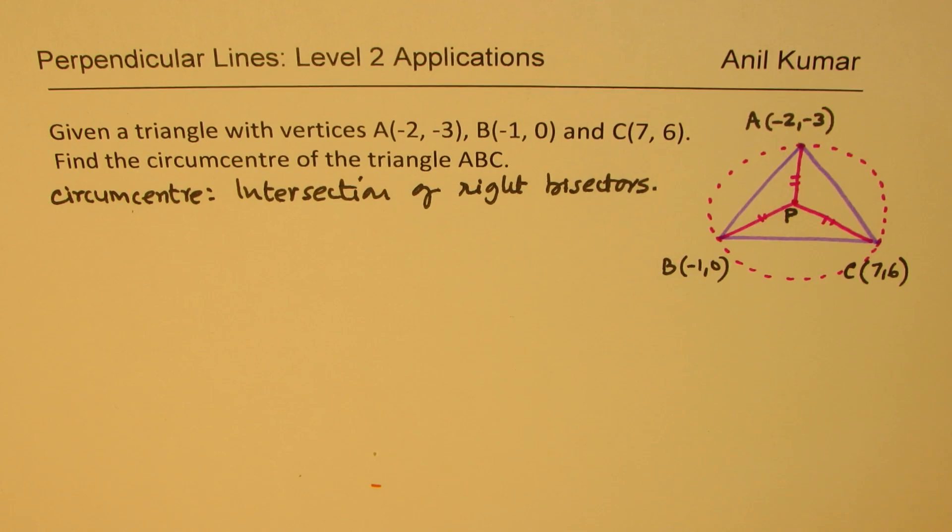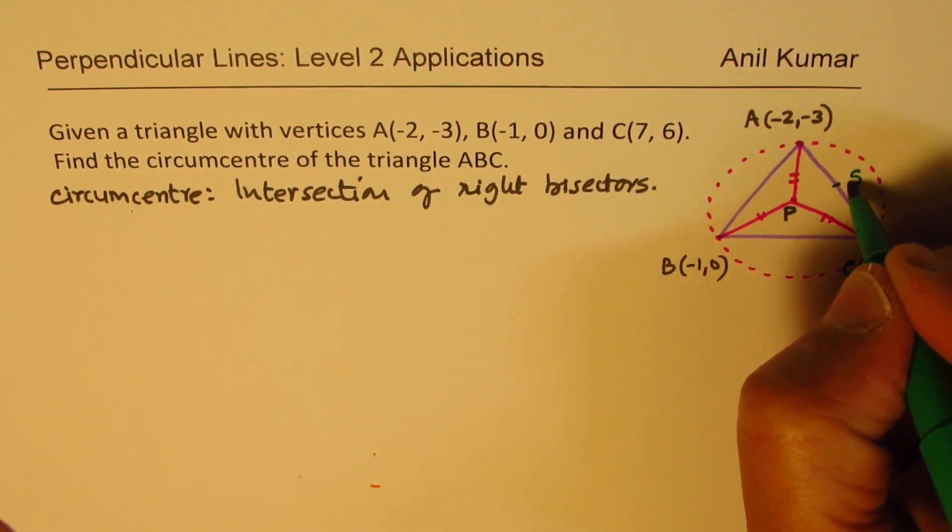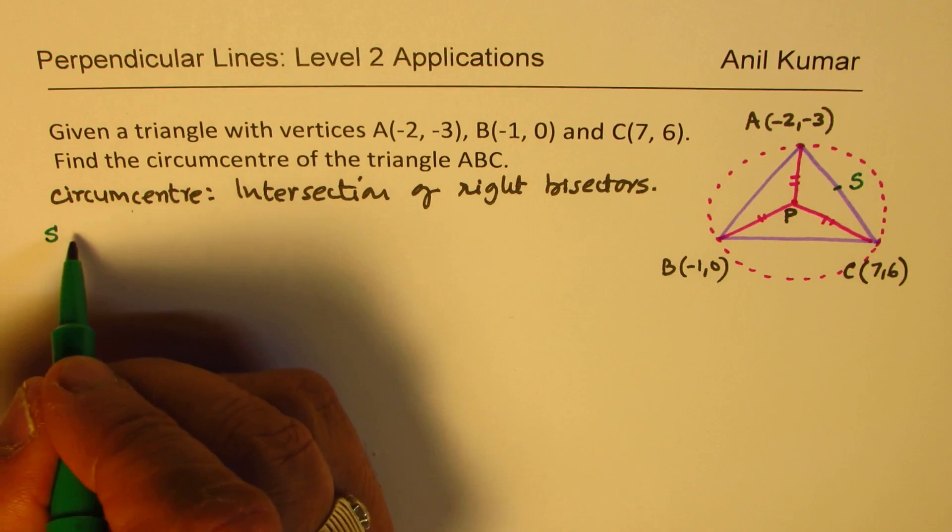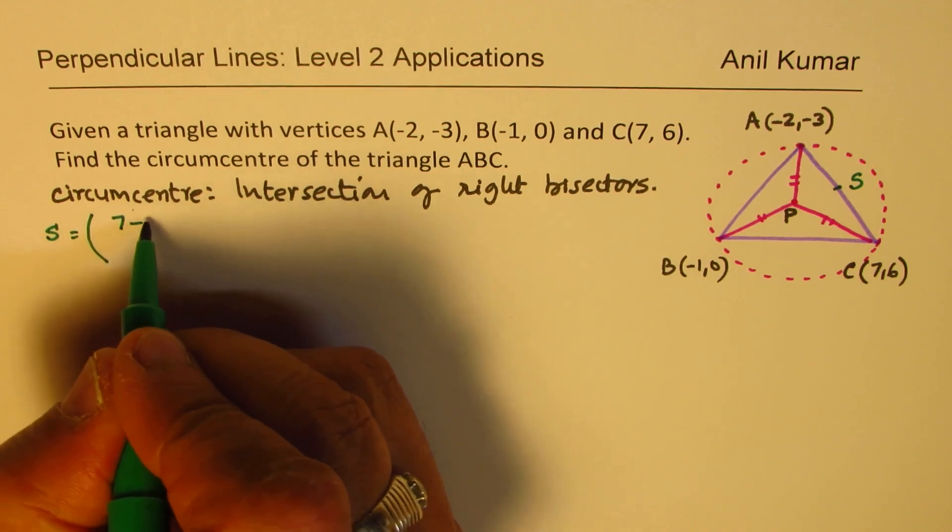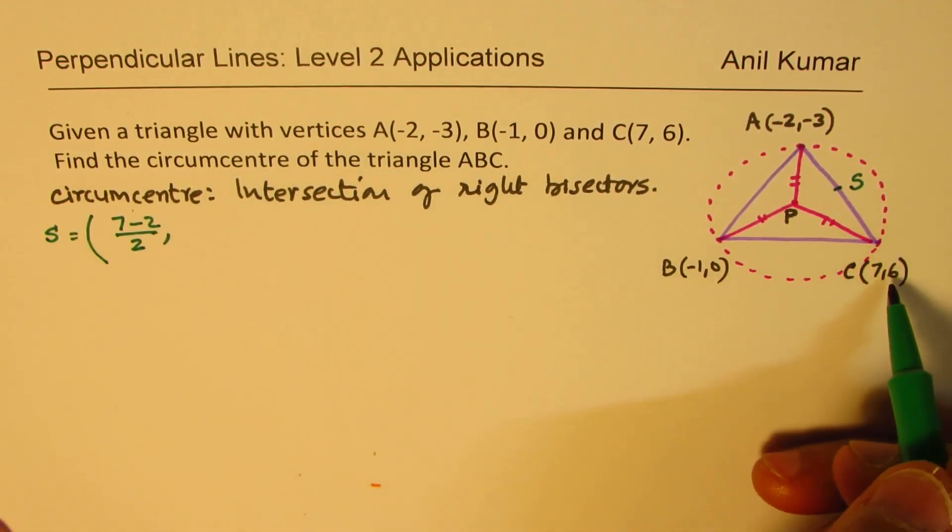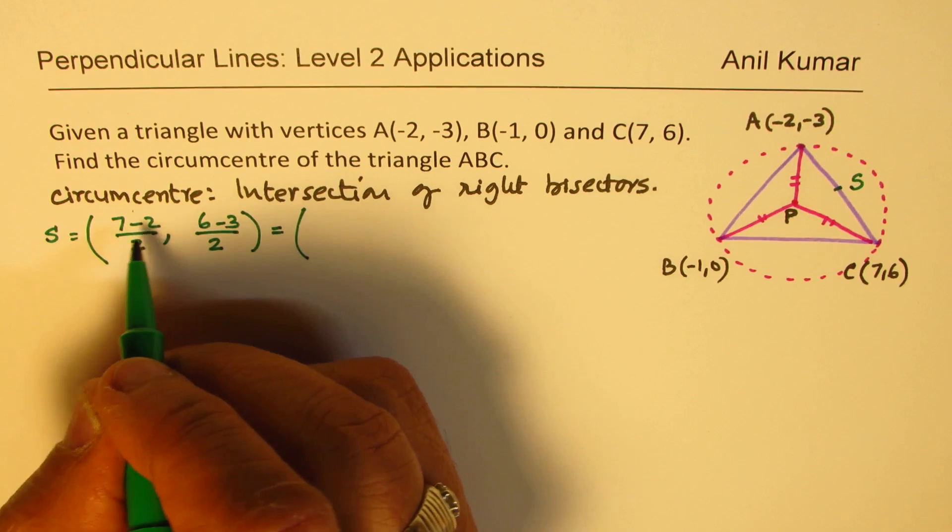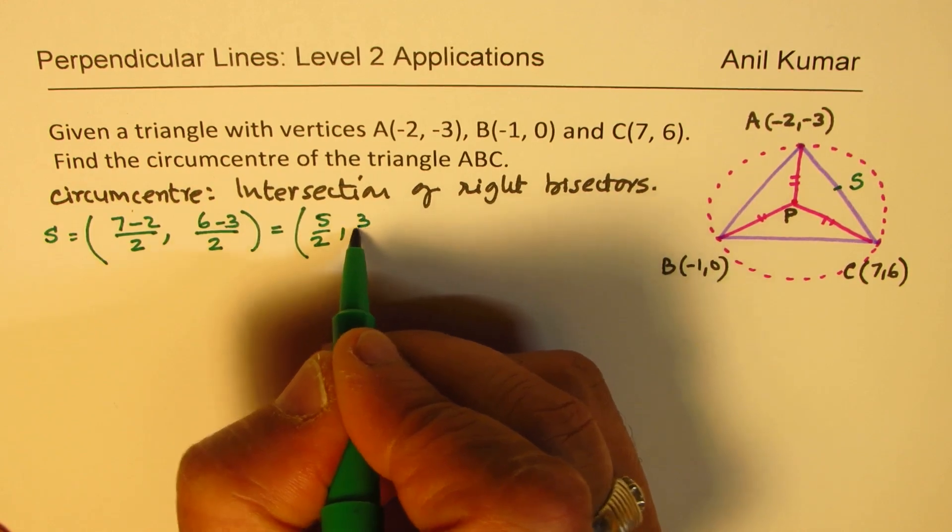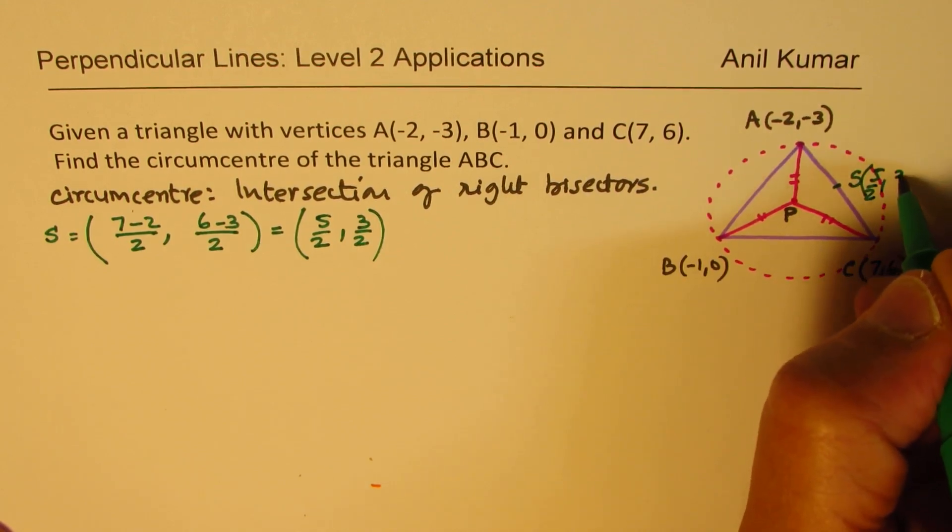To find the right bisector of AC, first step should be to find the midpoint. Let's say this midpoint is S. So the point S will be the x-coordinates average of 7 and -2, divided by 2. The y-coordinates will be average of y values, which is 6 - 3, divide by 2. So that is equal to 7 - 2 is 5, so we get 5/2. 6 - 3 is 3, so we get 3/2. So the midpoint S is (5/2, 3/2).